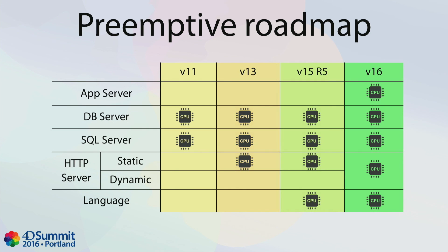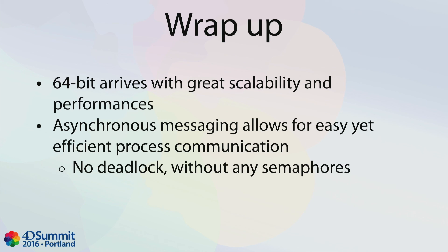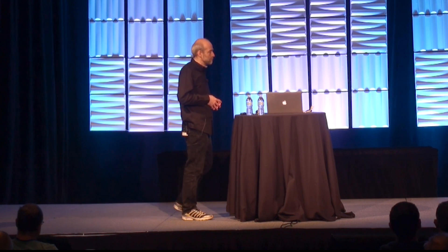This chart shows what is scheduled preemptively across v11, v13, v15, and v16 — the various servers and so on. In summary: 64-bit arrives with great scalability and great performance. With workers and CALL FORM you now have asynchronous messaging inside 4D. This is the key to efficient code — no deadlocks, no need for semaphores, and yet full benefit from your multi-core machine. Thank you.